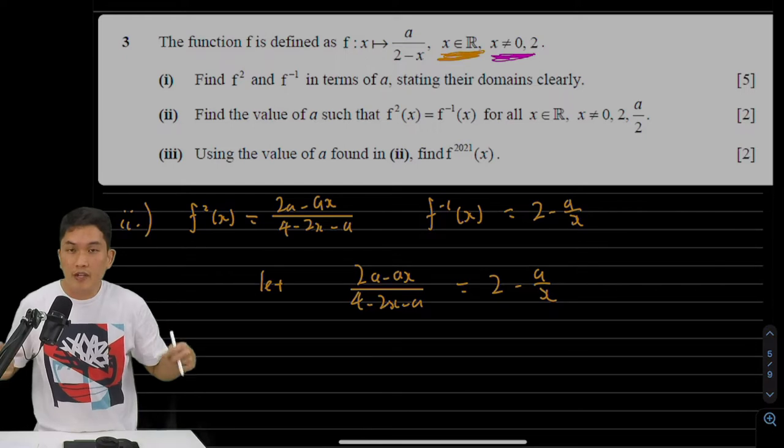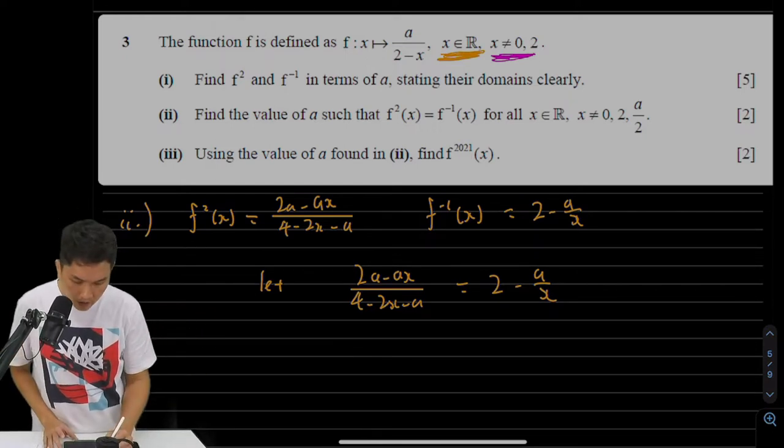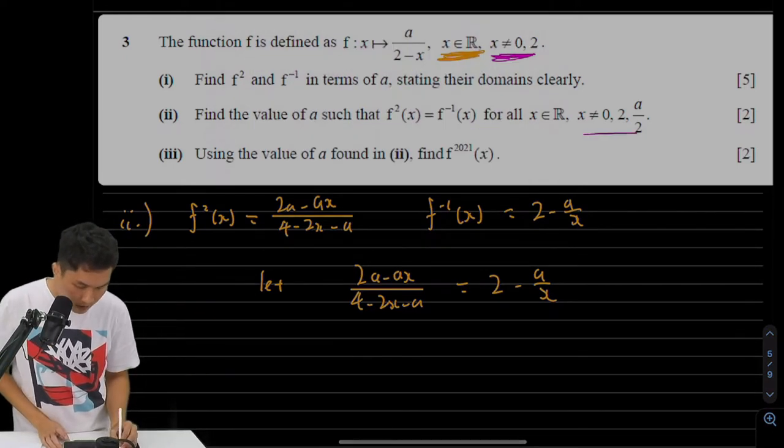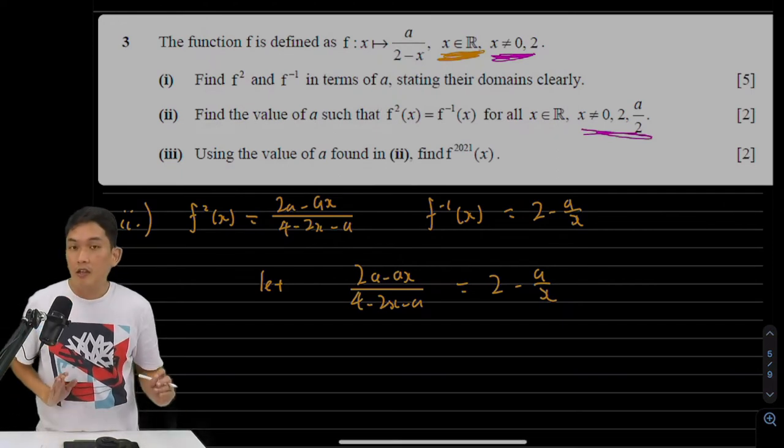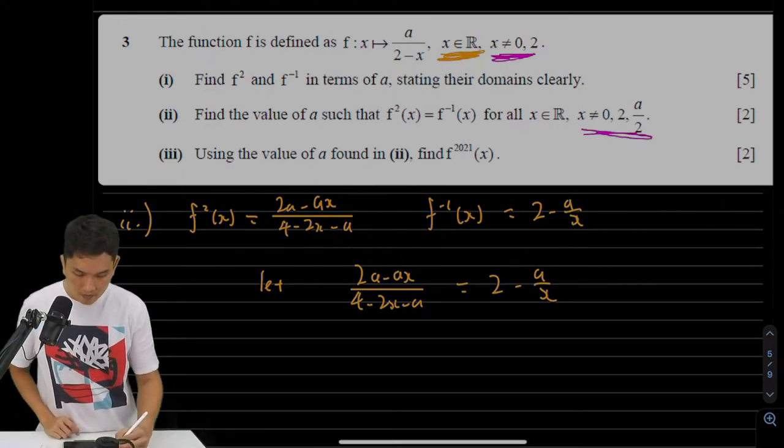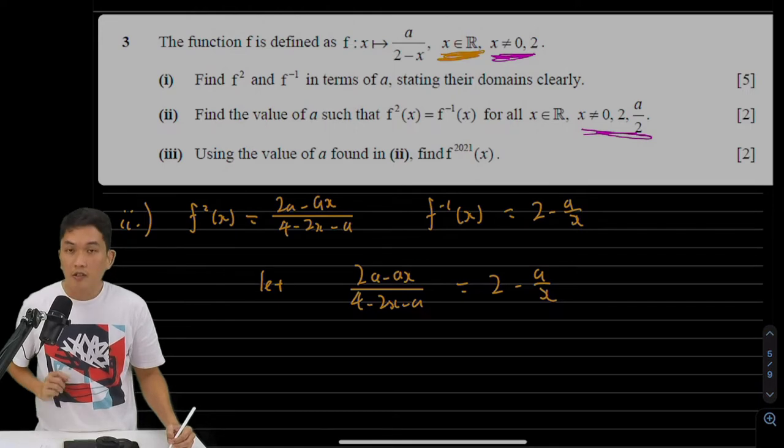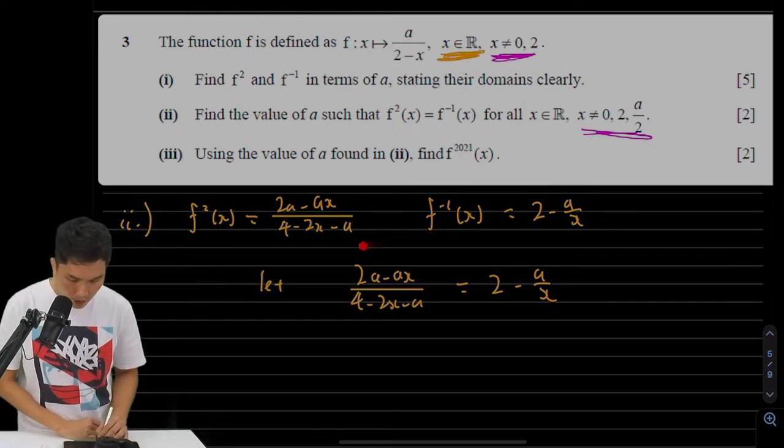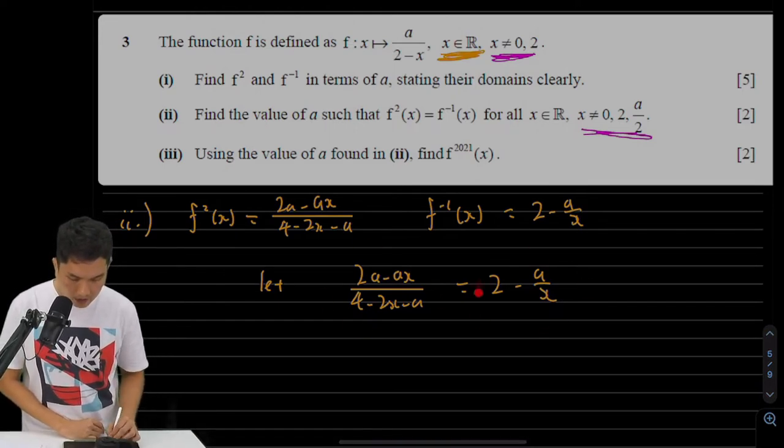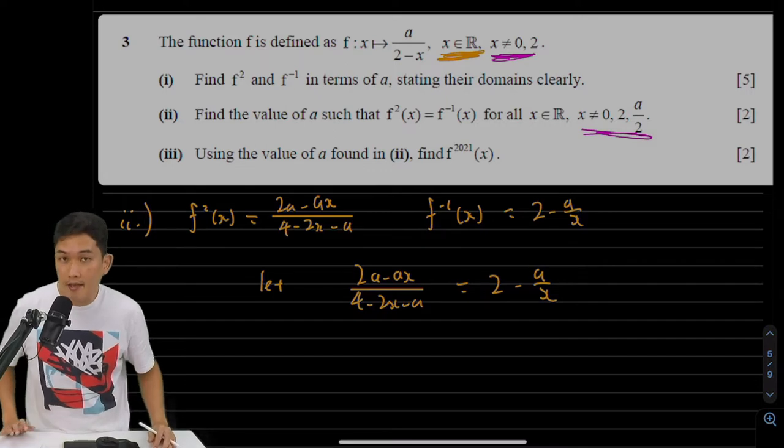So no matter what values of x you put inside, as long as you don't put those values that will destroy the machine, f squared is actually equals to f inverse if you choose the right value of a. So I've gone ahead and let f squared equals to f inverse and we have to solve for a.